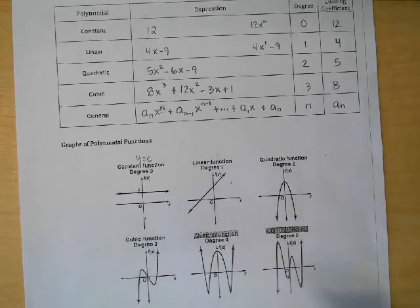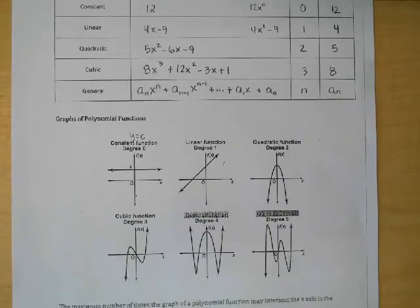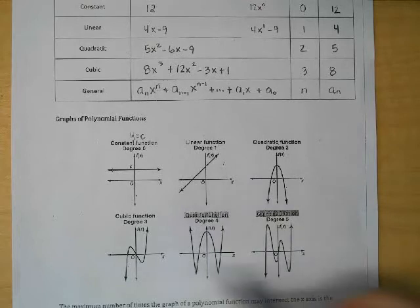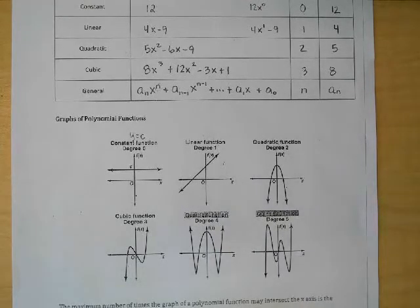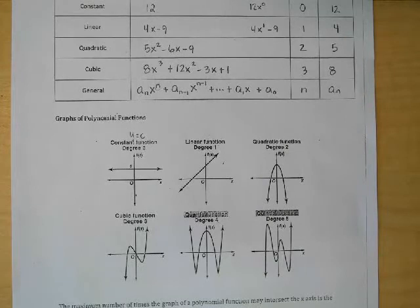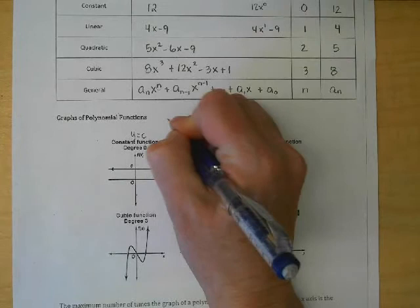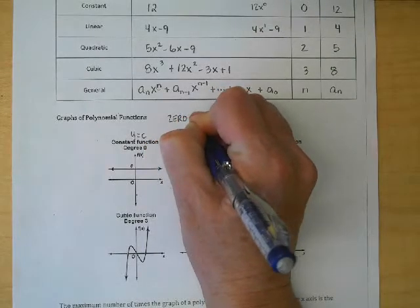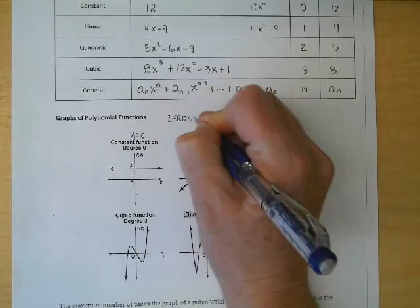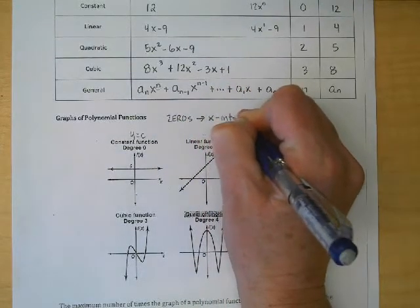This is a fourth degree function called quartic, and this is a fifth degree function called quintic. Our goal in this section is to be able to graph all of these types of things without a calculator. One of the things I want you to notice is the zeros. The zeros are just x-intercepts.